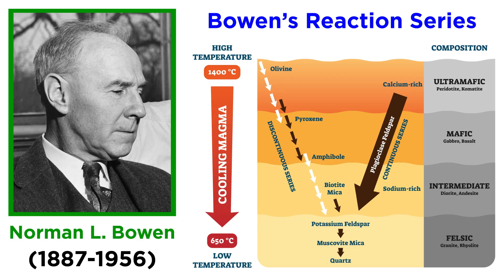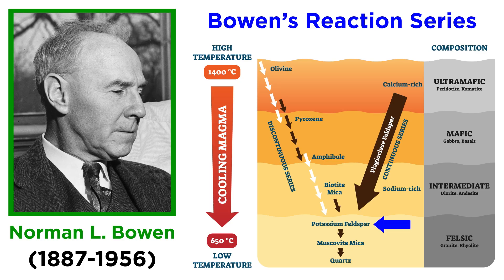In 1928, pioneering geologist N. L. Bowen created an experimental model for the crystallization order of a standard magma as it cools and chemically evolves. In Bowen's reaction series, the first mineral to crystallize is olivine, followed by pyroxene, then amphibole, then biotite, and finally potassium feldspar, muscovite, and quartz. Plagioclase can exist at all stages of Bowen's reaction series, as it is the most abundant mineral in the crust.